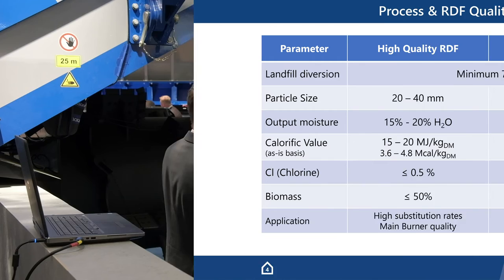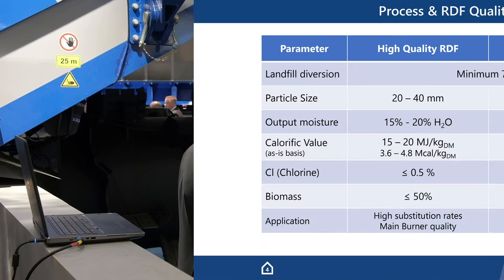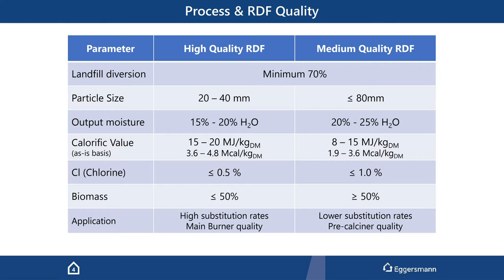For characterization: what we call high quality RDF involves small particle size, low moisture content, and calorific values between 15 and 20 megajoules, or 3.6 to nearly 5 megacalories. It also has low chlorine content and lower biomass content, because biomass has a lower calorific value. This type of RDF can be used for high substitution rates, even in the main burner.